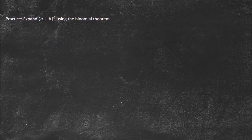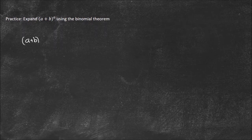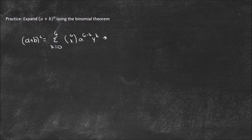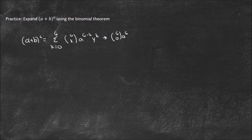If we wanted to do this by hand we'd have to multiply it out six times — trust me, it would take a very long time. But the Binomial Theorem makes it much easier. So (a + b)⁶ equals the summation from k equals 0 to 6 of 6-choose-k, times a to the (6 minus k), times b to the k.